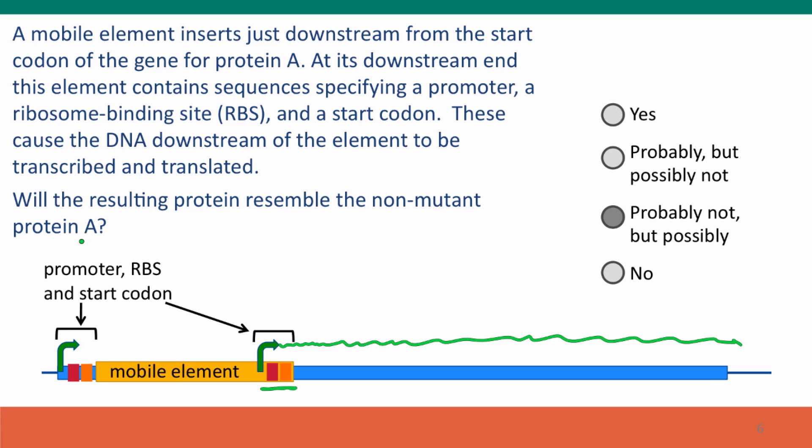And the answer is, well it could, but it probably won't. Even though in this drawing almost all of the gene for protein A is intact, and it's got a substitute promoter and binding site and start codon, there's one problem: what's the probability that we have the correct reading frame here?